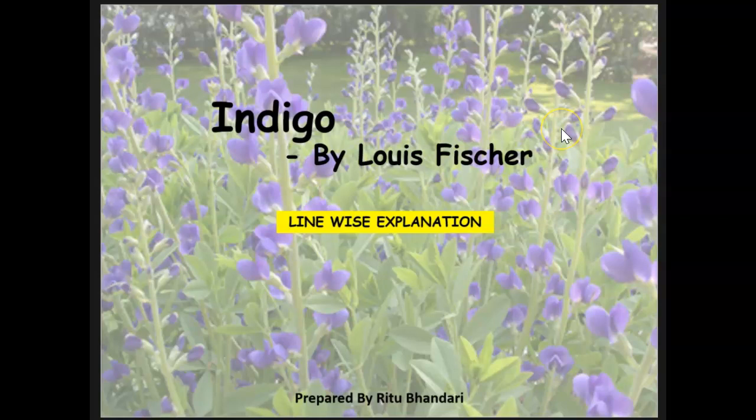The title Indigo focuses our attention on the issue of exploitation of indigo sharecroppers at the hands of cruel British planters. The British had compelled them through a long-term agreement to plant indigo on 15% of their land and surrender the entire harvest as rent. After the development of synthetic indigo by Germany, the British planters extracted money from the peasants as compensation for being released from the 15% agreement. The peasants who wanted their money back filed civil suits, and Rajkumar Shukla persuaded Gandhi to take up the case of indigo sharecroppers.